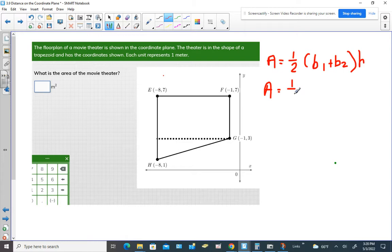Alright, so we need to figure out which two lines are parallel to each other. That's this line right here and this line right here. So I'm just going to move this out of the way because we're not exploring the idea of rectangle and triangle. We're actually going to use the formula for area of a trapezoid.